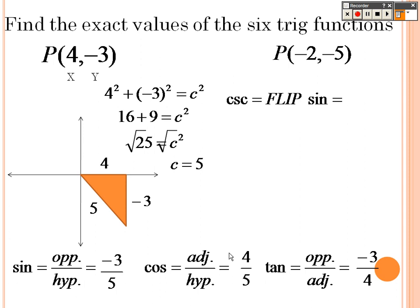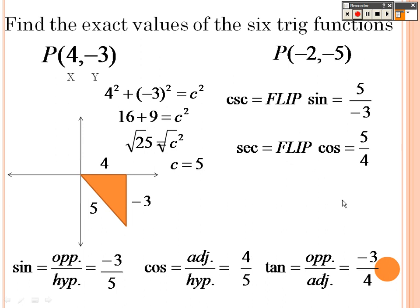To find cosecant, you just flip sine, so it would be 5 over negative 3. To find secant, you flip cosine, which would be 5 over 4. And to find cotangent, you flip tangent, which would be 4 over negative 3.